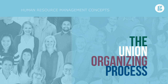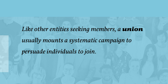The process of unionizing workers may begin in one of two primary ways: a union targets an industry, a region, or a company, or employees request union representation. Like other entities seeking members, a union usually mounts a systematic campaign to persuade individuals to join. As would be expected, employers respond to unionization efforts by taking various steps to oppose them.